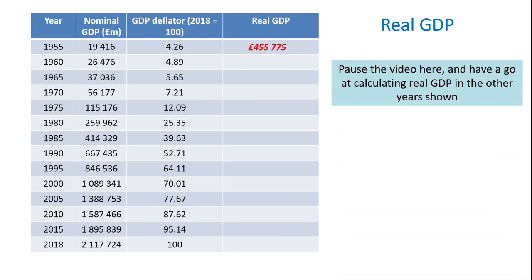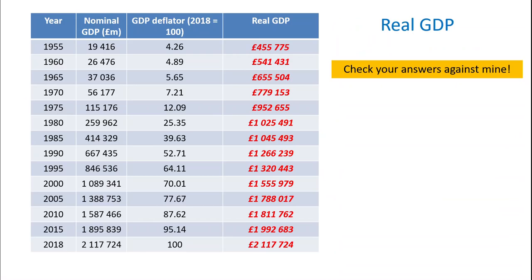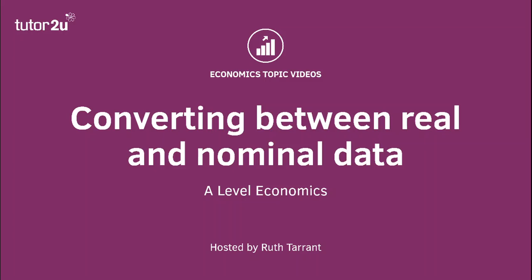You can pause the video here and have a go at calculating real GDP for the other years shown. You don't necessarily have to do all of them — just pick a couple to practice. You've got the answers there to check against mine. Remember, these are all in millions of pounds, just like the nominal GDP. Don't forget that in an exam, it might be the case that you are given real GDP values and the price index and have to work backwards to calculate nominal GDP — just rearrange the formula. Check out our other videos on quantitative skills for economics A-level. Thanks for watching.